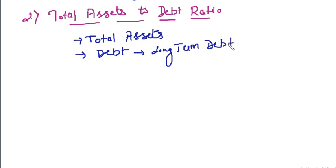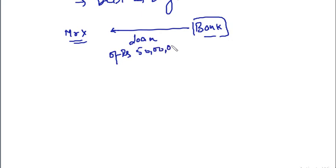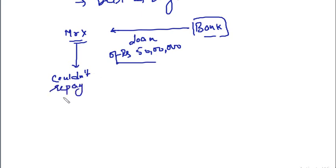We will consider only the long-term debt and not the current liabilities. Now, what is the relevance of this total assets to debt ratio? Why do we calculate this ratio? I'll take a very simple example. Mr. X took a loan from a bank — a loan of rupees 50 lakhs. After some time, Mr. X could not repay the loan; that is, Mr. X is a defaulter.